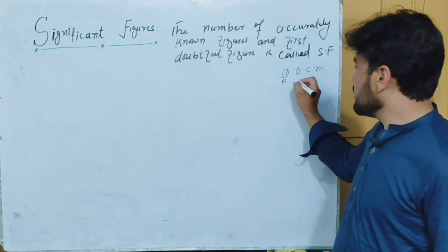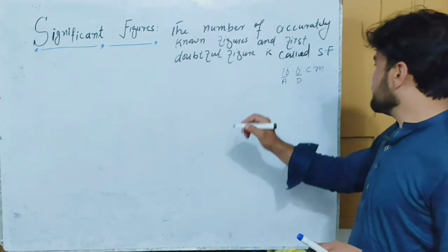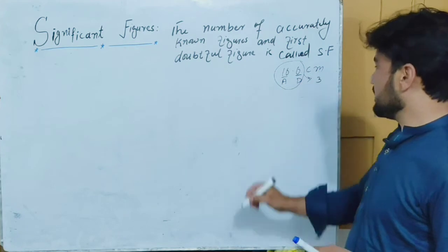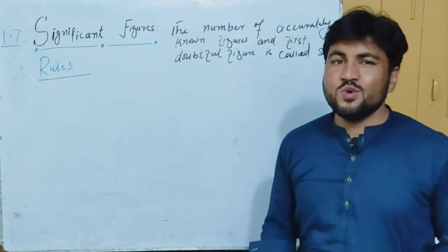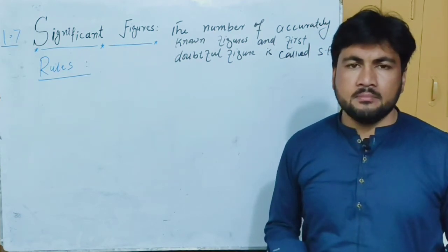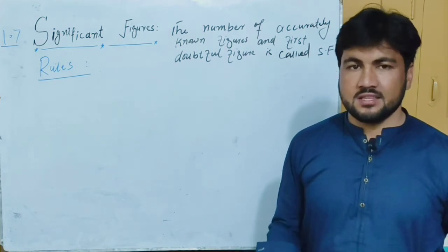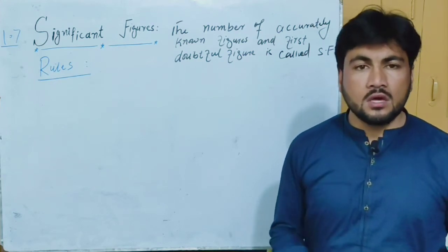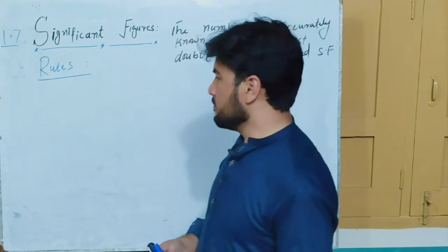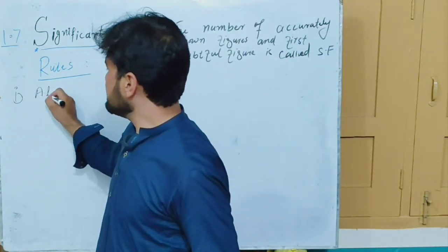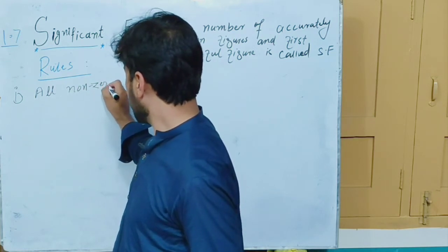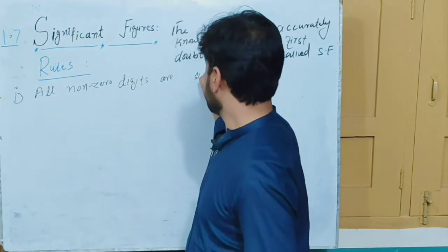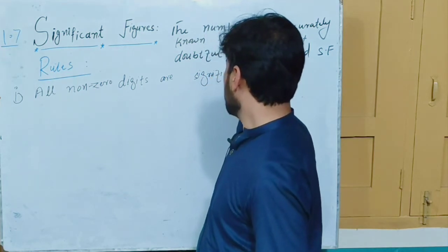So significant figures include all the accurately known digits and the first doubtful digit. Now, to understand how to find the number of significant figures — what to count and what not to count — we look at the rules. The first rule is: all non-zero digits are significant.